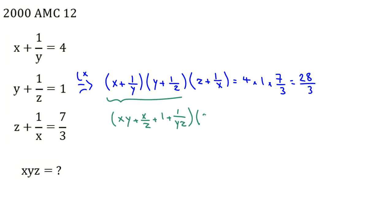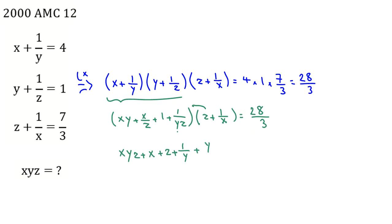Writing the rest: multiplying by z, then 1/x, we track each term. z times xy gives xyz; z times x/z gives x (the z's cancel); z times 1 gives z; z times 1/(yz) gives 1/y (the z's cancel). Then multiplying by 1/x: 1/x times xy gives y (x cancels); 1/x times x/z gives 1/z; 1/x times 1 gives 1/x; 1/x times 1/(yz) gives 1/(xyz). The full product equals 28 over 3.